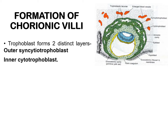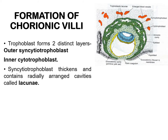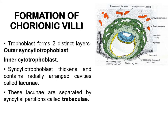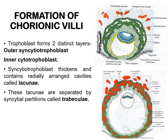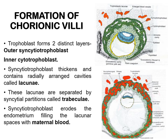These lacunae progressively increase in size, communicate with each other, and are arranged radially. The syncytial partitions which separate the lacunae are now known as trabeculae. At the same time, the syncytium also grows into the surrounding decidua, eroding the walls of the maternal sinusoids. As a result, the maternal blood enters the lacunar spaces. The trabeculae formed by the syncytiotrophoblast are surrounded by maternal blood which fills the lacunar spaces, thus inducing uteroplacental circulation.